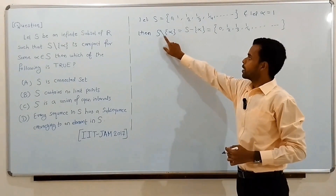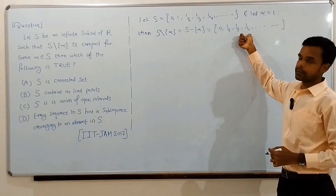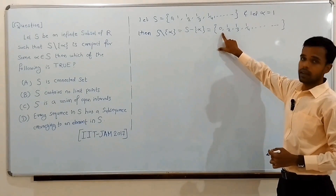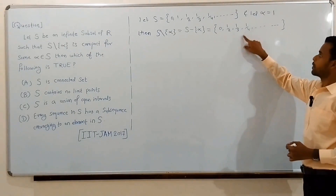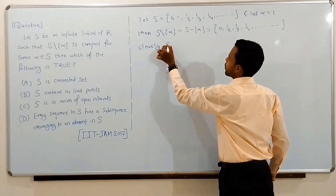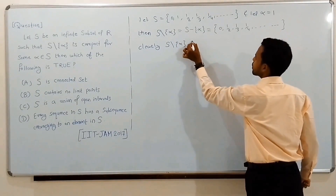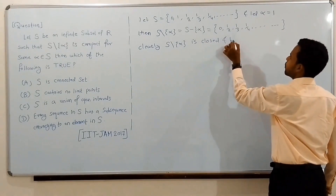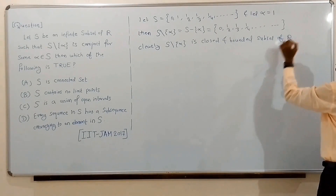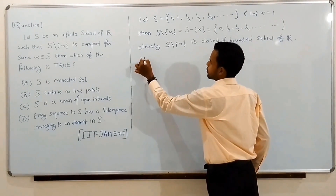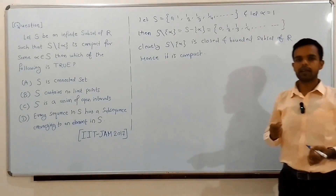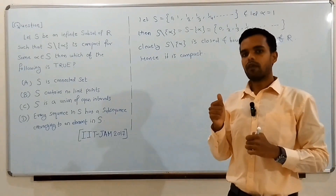Clearly, S minus {alpha} is a closed and bounded subset of R. It is closed since 0 is the only limit point of this set and 0 belongs to this set. It is bounded because every element lies between 0 and 1. Hence, by the Heine-Borel theorem, since S minus {alpha} is closed and bounded, it is compact — which is exactly the required condition.